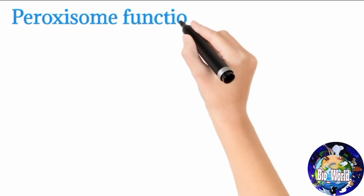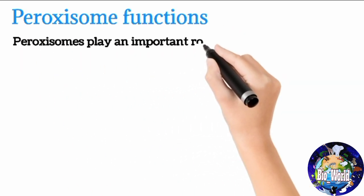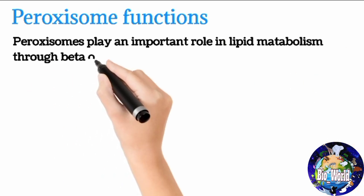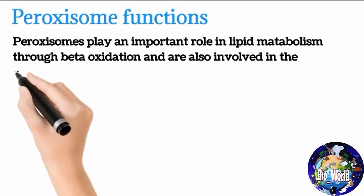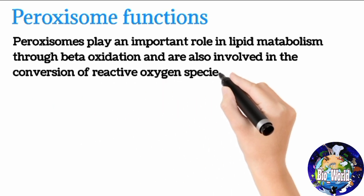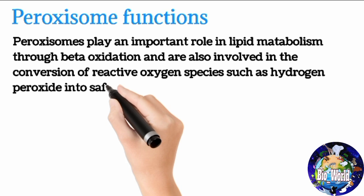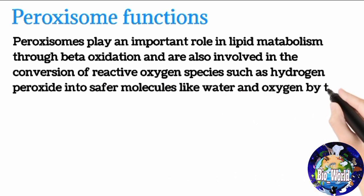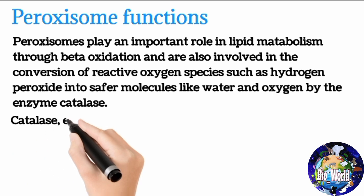Peroxisome function: Peroxisomes play an important role in lipid metabolism through beta-oxidation. They are also involved in the conversion of reactive oxygen species such as hydrogen peroxide into safer molecules like water and oxygen, by the enzyme catalase.